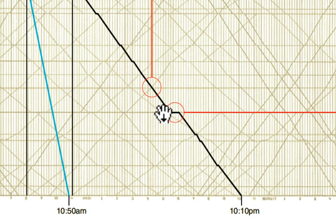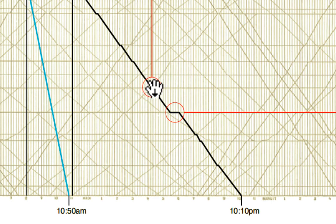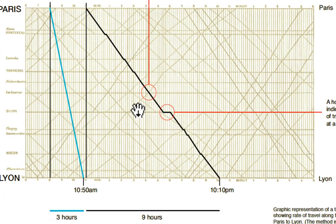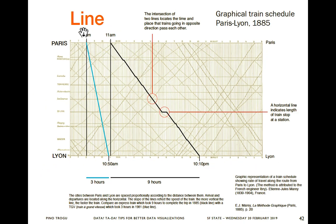Where the train stops at a station for a certain amount of time, the line is flat. And where two lines cross, it's actually another train coming in the other direction — literally crossing each other on the tracks. The key thing to get from this graph is: the steeper the slope, the faster the train. This is a TGV high-speed train that now takes about three hours.